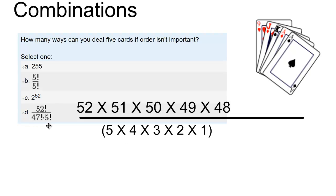And so this is my expression for the number of ways to deal 5 cards from the 52 card deck if order doesn't matter.